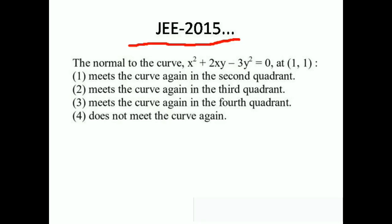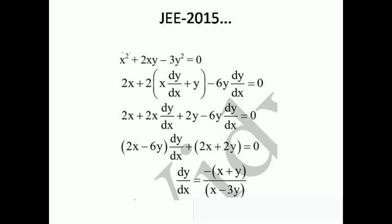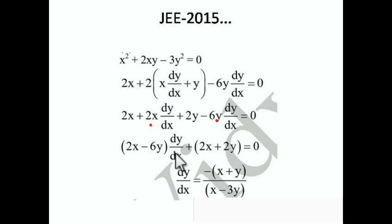We differentiate x² + 2xy − 3y² = 0 implicitly. This gives: 2x + 2x(dy/dx) + 2y − 6y(dy/dx) = 0. Collecting dy/dx terms: dy/dx(2x − 6y) = −2x − 2y, so dy/dx = −(x + y)/(x − 3y). At the point (1, 1): dy/dx = −(1+1)/(1−3) = −2/−2 = 1.